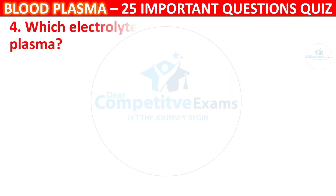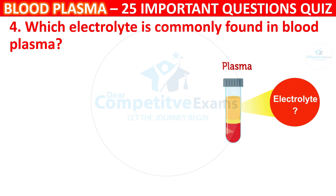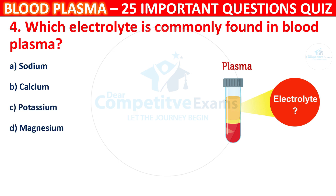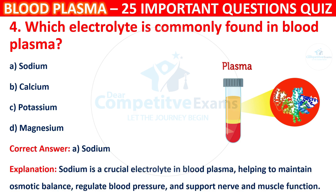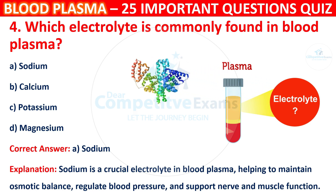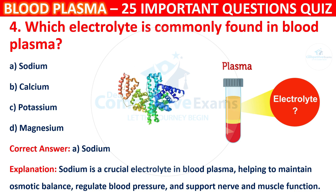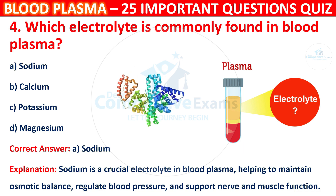Question 4: Which electrolyte is commonly found in Blood Plasma? Your options are Sodium, Calcium, Potassium, or Magnesium. The correct answer is A, i.e. Sodium. Sodium is a crucial electrolyte in Blood Plasma, helping to maintain osmotic balance, regulate blood pressure, and support nerve and muscle function.